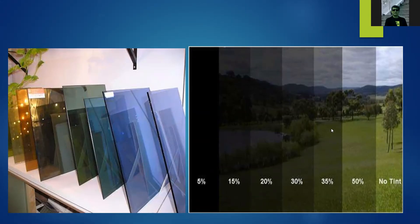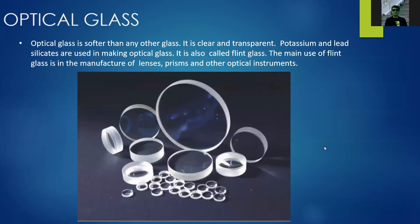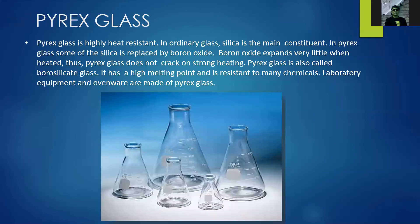Optical glass is softer than other types of glass. It is clear and transparent. Potassium and lead silicates are used in making optical glass, which is also called flint glass. The main uses of flint glass are in the manufacture of lenses, prisms, and other optical instruments such as microscopes, eyeglasses, and binoculars.